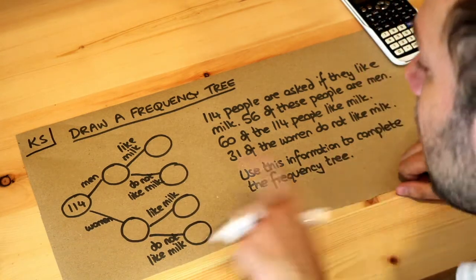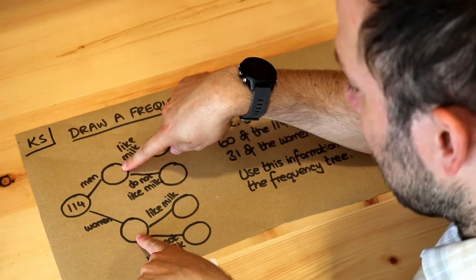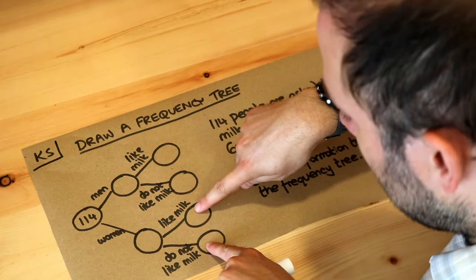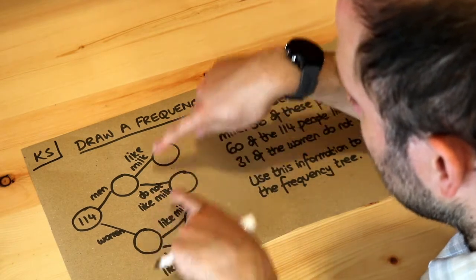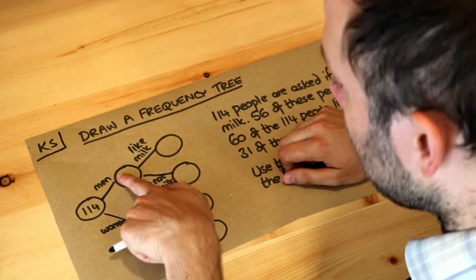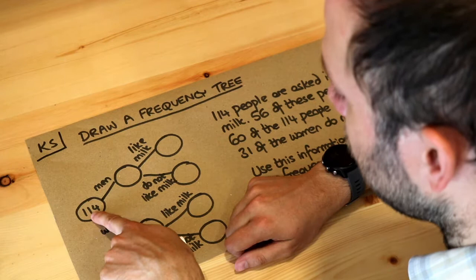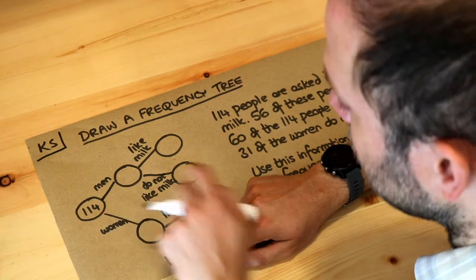The key point is that when you branch off into these frequencies here, those two have to add up to this, just like these two would have to add up to this to the left of it, these two would have to add up to the circle to the left of it. So the number of men plus the number of women would have to equal the frequency to the left of it, which is the total number of people.